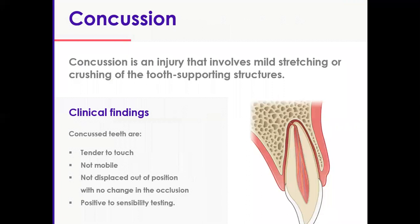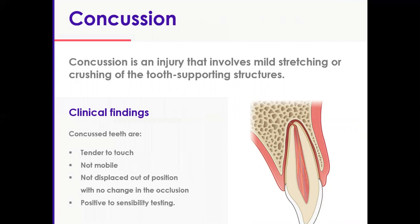Concussion is an injury that involves very mild stretching or crushing — so it could be inwards or outwards force of the tooth and the overall supporting structures, basically the PDL and whatever the PDL and the cementum are attached to. The clinical findings include tenderness to touch, no mobility — and that's very important. The tooth should be rock solid with physiologic mobility only, because if there is mobility it will be something else. No displacement, no change in bite, positive to sensibility testing.